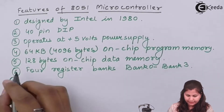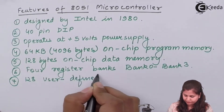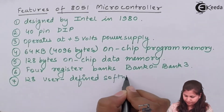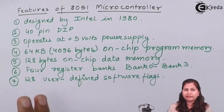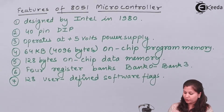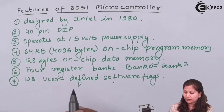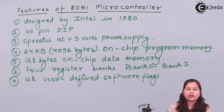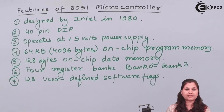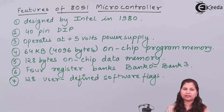The next feature is that it has 128 user-defined software flags. Flags are used to indicate the internal conditions of the registers. In the case of 8051, the user can define these 128 flags in programs and use them to know the conditions of the internal registers.